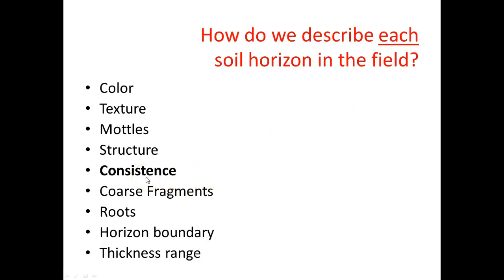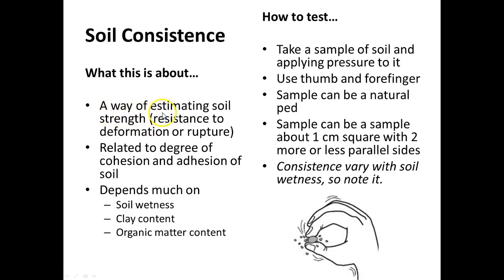The last part of Part A is consistence. Consistence differs from structure. Consistence is a way of testing or estimating soil strength and resistance to deformation and rupture. It relates to the degree of cohesion and adhesion of a soil PED, and it depends on wetness, clay content, and organic matter. What you're going to do is take a soil PED — approximately one centimeter by two centimeters of soil — and squeeze it between your thumb and your forefinger, then describe its consistence. Did it break very easily or not?